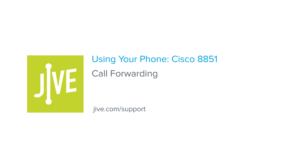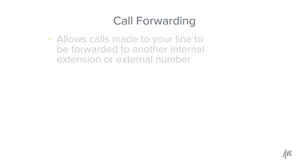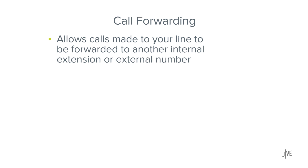In this video, you will learn how to enable and disable call forwarding on a Cisco 8851 phone. Call forwarding allows calls made to your line to be forwarded to another internal extension or external number.